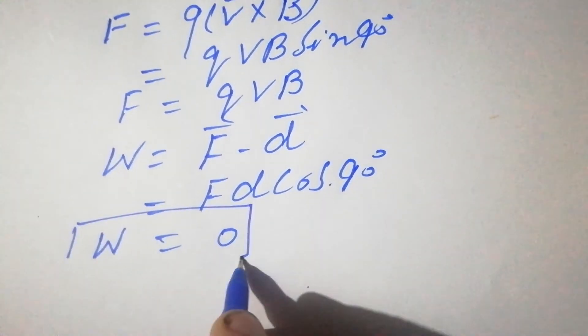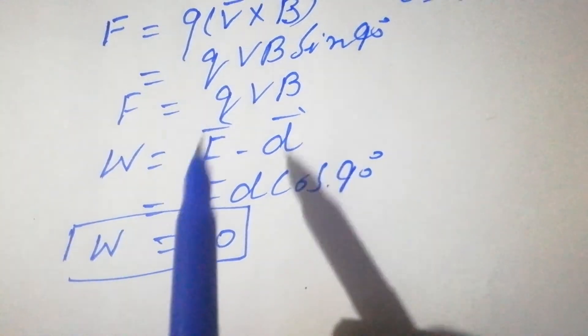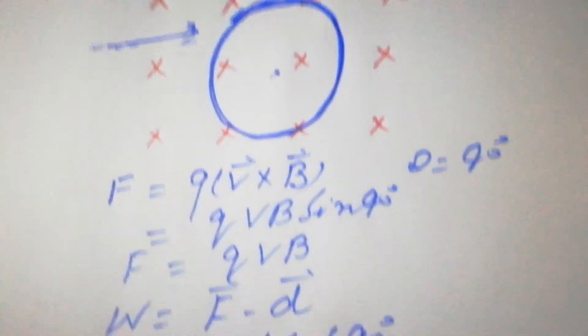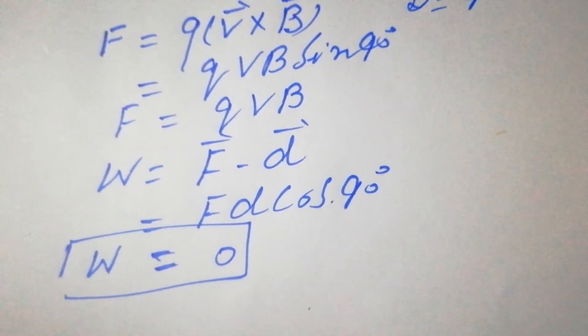This shows that the work done by magnetic force on a moving charged particle is zero.